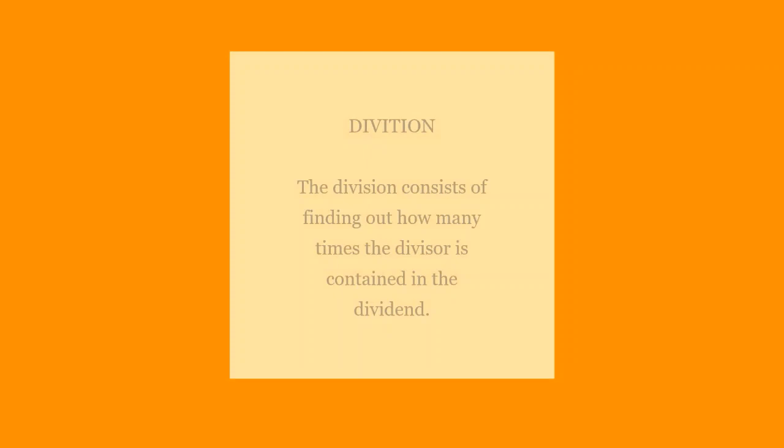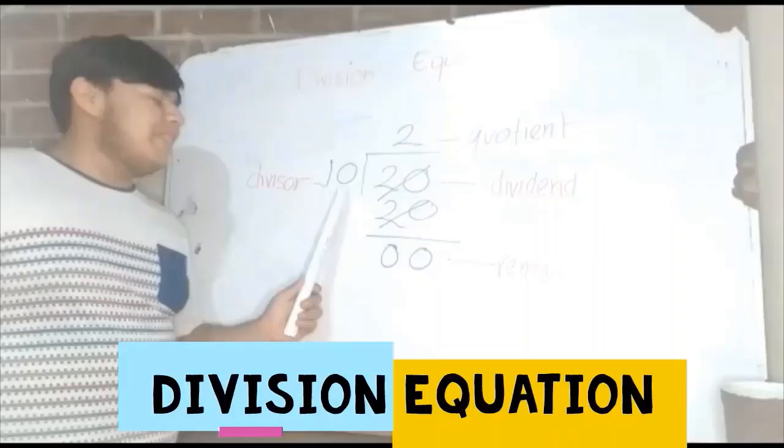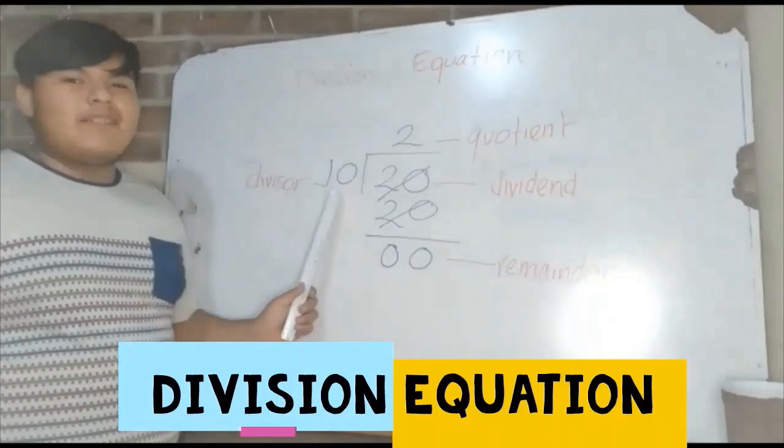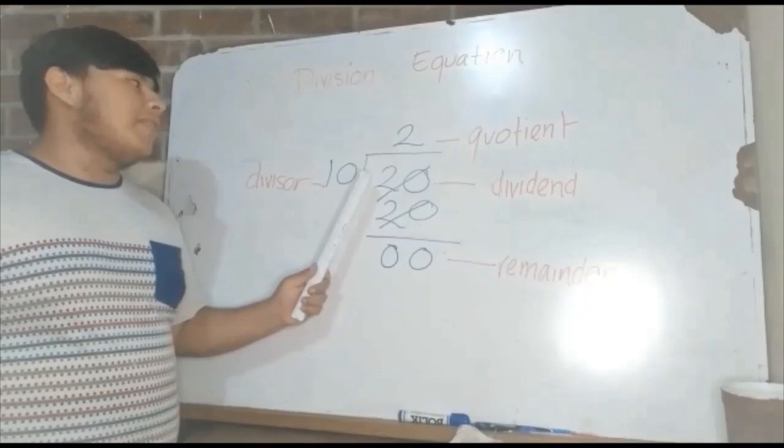Division consists of finding out how many times the divisor is contained in the dividend. We divide twenty by ten. The remainder is zero.